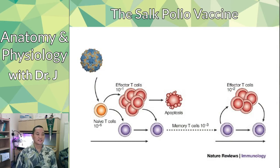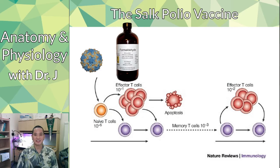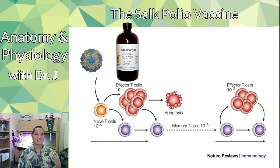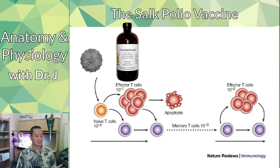How did Salk make this vaccine? He took the polio virus and treated it with formaldehyde. Formaldehyde changes chemical structures — it rearranges bonds and forms cross-links between molecules, which gums up the proteins and nucleic acids in the virus. The virus retains its original shape, but the chemicals, enzymes, and nucleic acids can no longer function. This is what scientists mean when they say they 'kill' a virus — chemically treating it so it can no longer replicate.